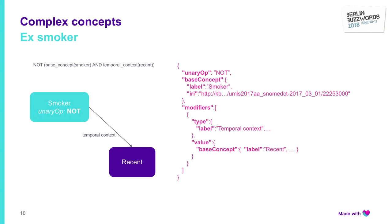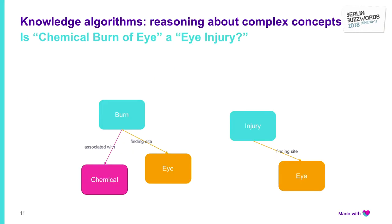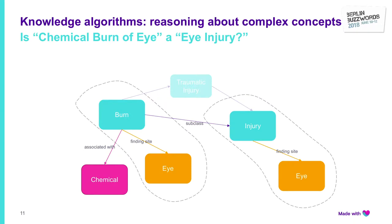In this case, we know that the modifier for this particular complex concept is temporal context referring to "recent" — so we are saying it is not the case that this patient has been a smoker recently. We have a library to deal with these complex concepts that we expose through a web service. For example, we can compare complex concepts: is a chemical burn of an eye an eye injury? You can see this is more specific because it has an extra edge. The relationship between burn and injury goes through the knowledge base via traumatic injury — burn is a subclass of that, which is in turn a subclass of injury. Transitively, burn is a subclass of injury, so we can establish that chemical burn of an eye is a subtype of eye injury.